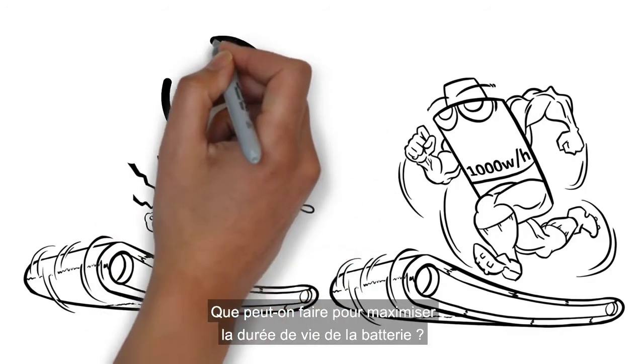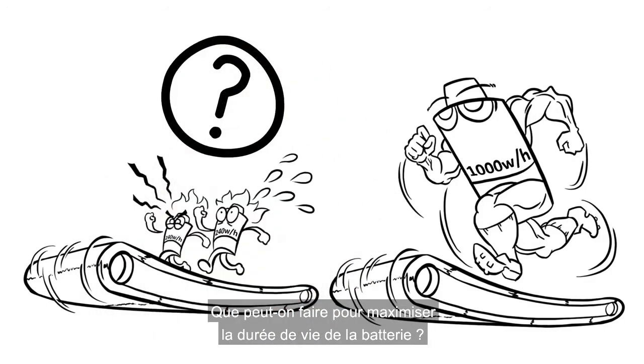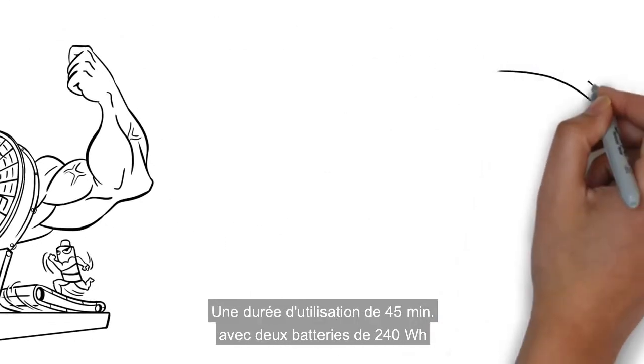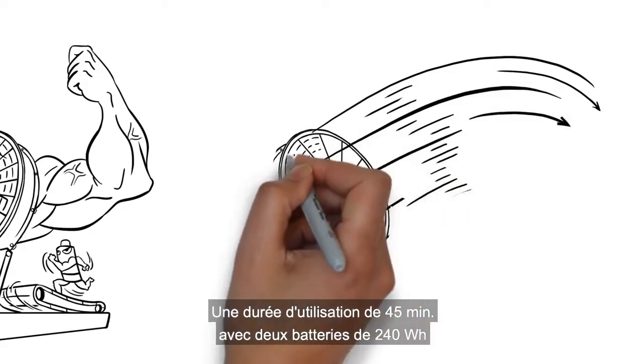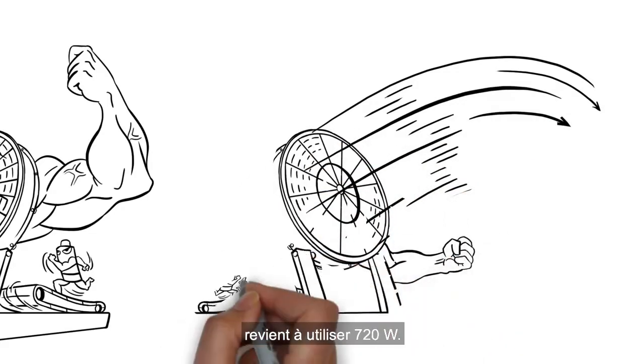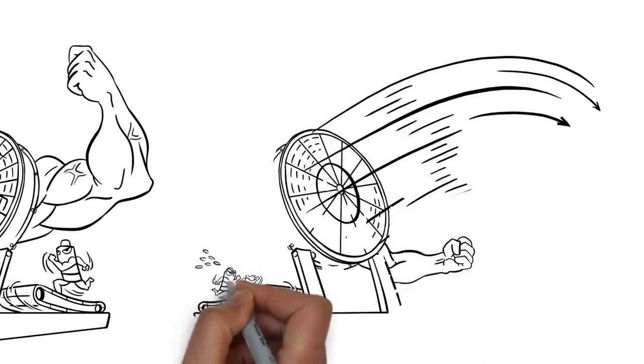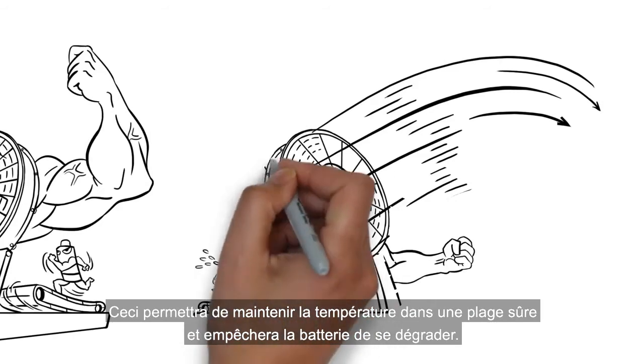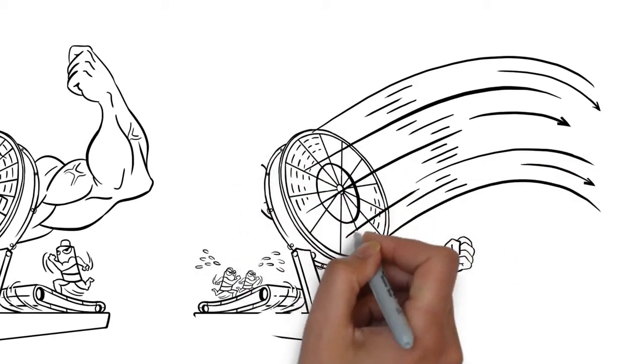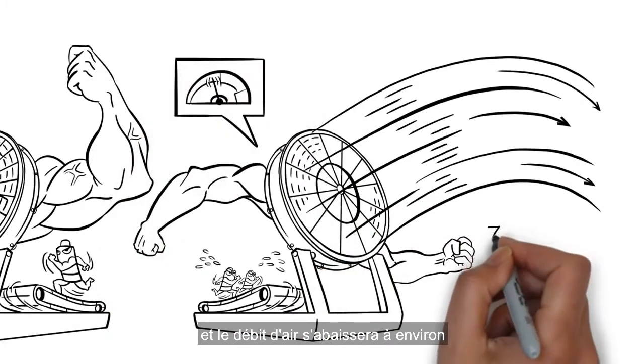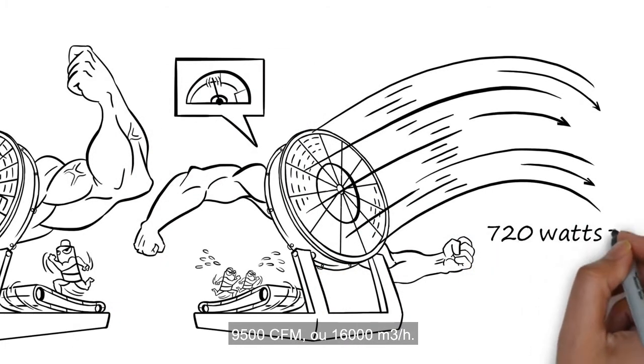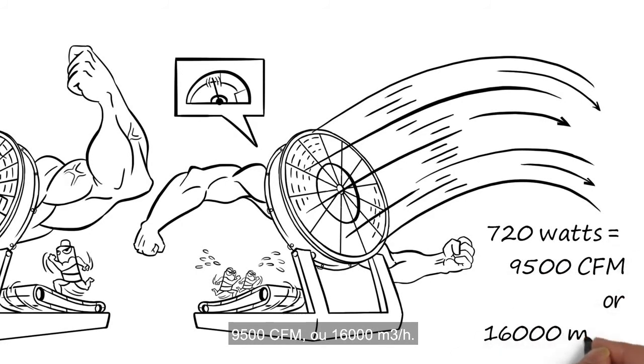So what can one do to maximize the cycle life of their battery? Don't over-stress your battery. Using a 45-minute runtime with two 240 watt-hour batteries would mean operating at around 720 watts. This should keep temperatures in a safe range and will not degrade your battery. But if you're using less power, you simply can't push as hard, and your airflow will decrease. In this case, to approximately 9,500 cubic feet per minute, or 16,000 meters cube per hour.